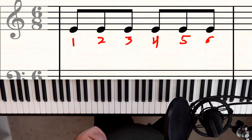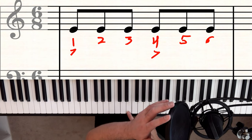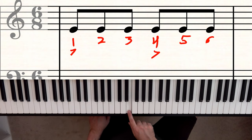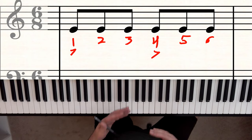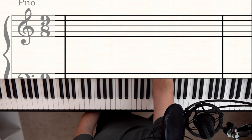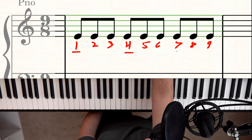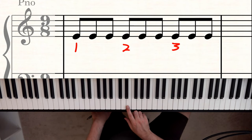Six-eight is known as a compound time signature because it can be counted as six individual beats — one, two, three, four, five, six — or as two groups of three: one, two, one, two. You think of it as two beats, each split into three parts. Nine-eight is similar: nine eighth notes per measure, grouped as three sets of three. The accents fall on beats one, four, and seven. Like six-eight, it's a compound time signature and can be counted in three beats of three.